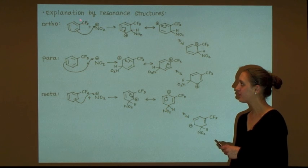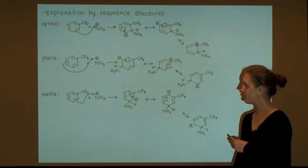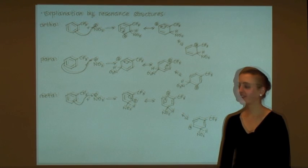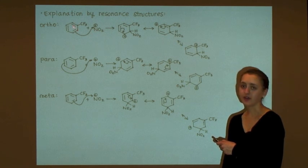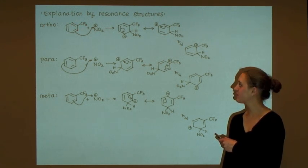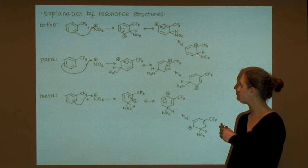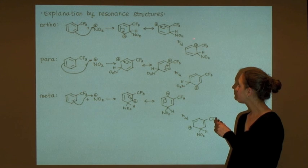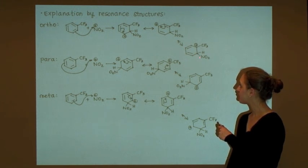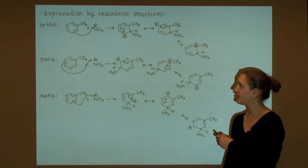Let's see why for trifluoromethylbenzene the meta-substituted isomer will ultimately be the major product, while the ortho and para-substituted isomers will be the minor products. When the nitronium ion attacks the position ortho to the trifluoromethyl group, this results in an arenium ion where the positive charge is ortho, para, and ortho to the newly installed nitro group. However, when the positive charge is adjacent to the electron-withdrawing trifluoromethyl group, this resonance structure is destabilized. Therefore, the arenium ion intermediate is destabilized, and the rate of production of this intermediate is relatively slow.